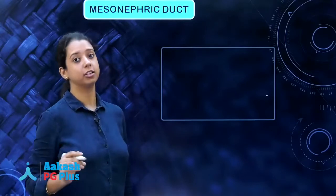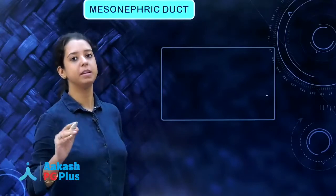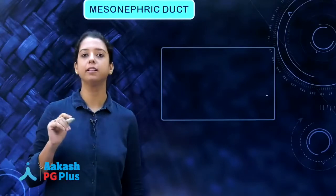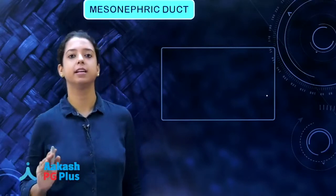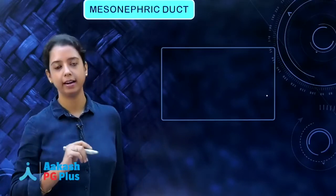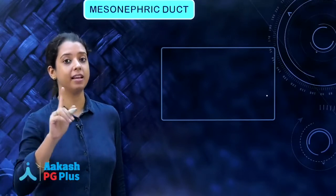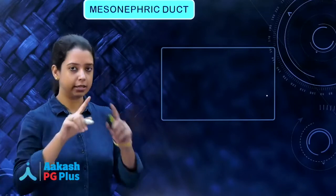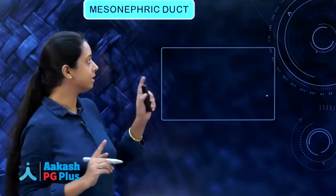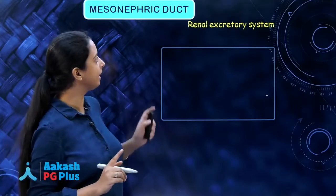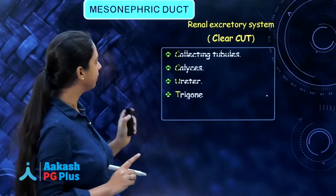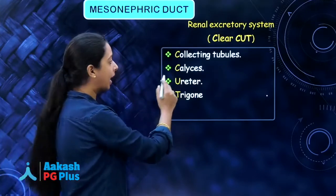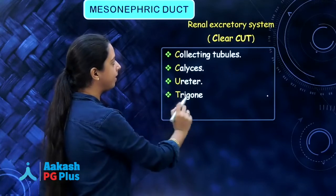Let us see what structures are formed by the mesonephric duct. The mesonephric duct is very important because it forms the male external genitalia, and along with that it forms the renal excretory system — not the kidney itself, but the renal excretory system. The renal excretory system constitutes the collecting tubule, calyces, ureter, and trigone.